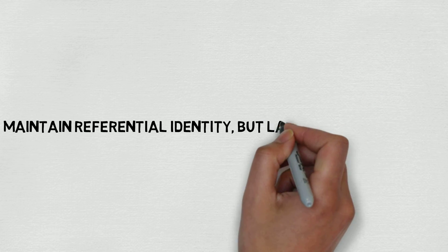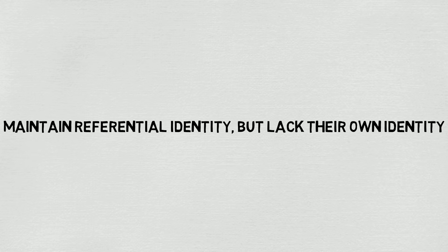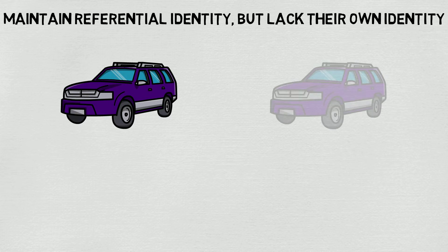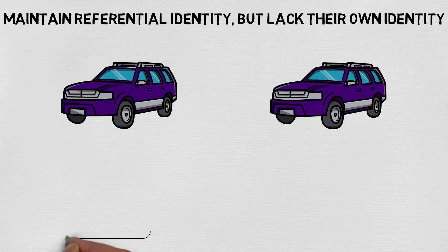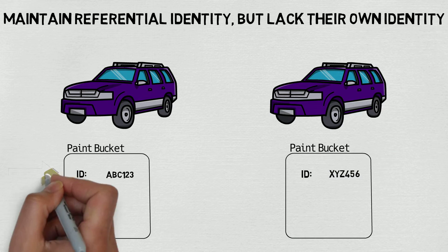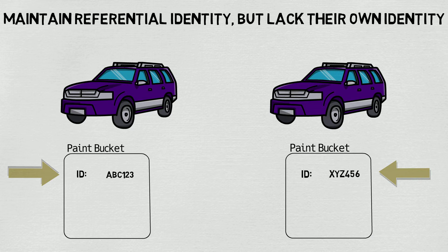The third principle of value objects is they maintain referential identity but lack their own identity. To take a closer look at this principle, let's consider two different car objects and take a look at the paint that was used for each of them. While observing the car objects, we can see that the paint buckets used for each car were different, as indicated by the different paint bucket IDs. This is the identity of the paint bucket itself.